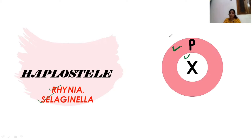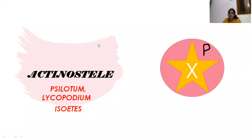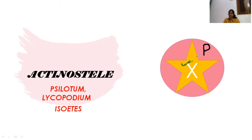The next type is actinostele, found in members like Lycopodium, Isoetes. In actinostele, phloem is present in a ring form and a star-shaped xylem is present inside. The characteristic feature of the actinostele is the presence of star-shaped xylem, found in Lycopodium and Isoetes.